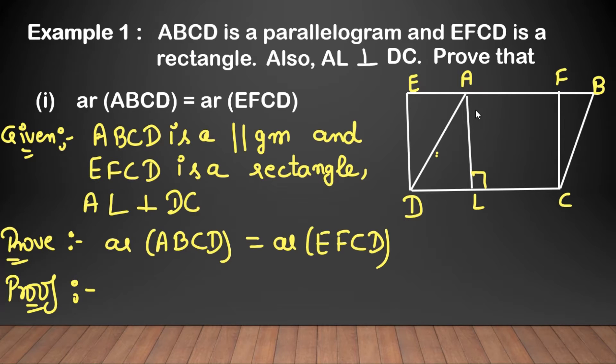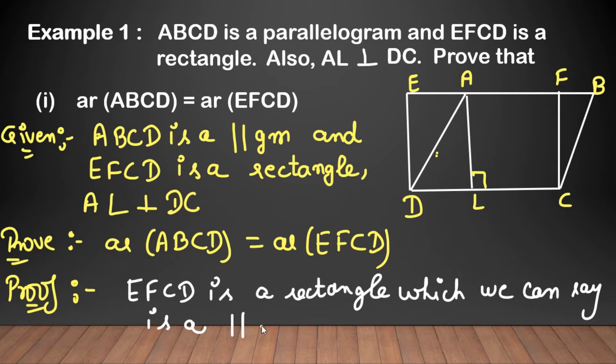Uske baad, dekhi, joh ABCD hai, ye ek parallelogram hai. And EFCD hai ek rectangle given hai. Rectangle mein opposite sides jo hoti hain, woh equal hoti hain. Or parallel bhi keh sakte hain usko. EFCD, jo ki rectangle hai, is also called parallelogram. We can say is a parallelogram.